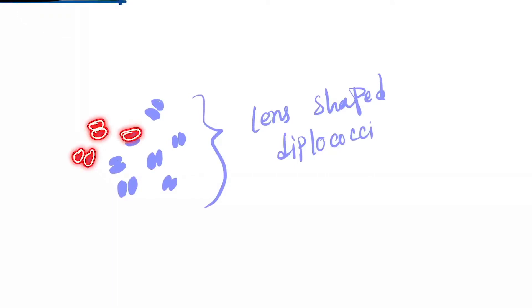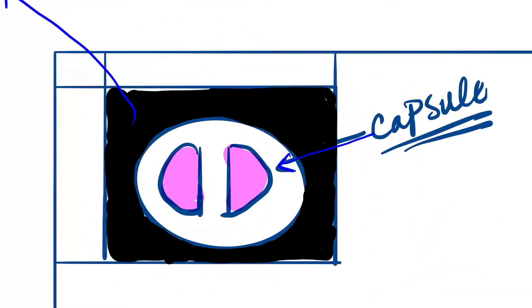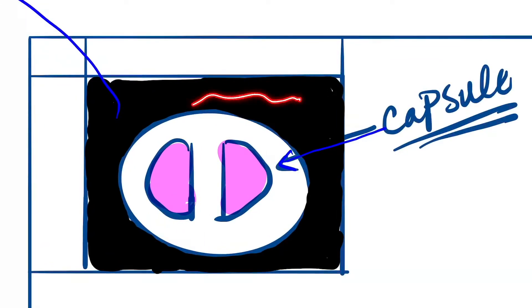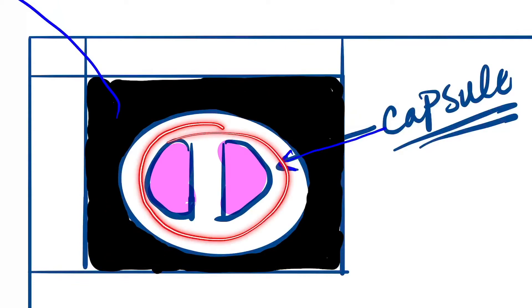Lens-shaped diplo cocci present in pairs. If we do the negative stain, you can see this picture. This is the India ink or black color, and this white portion is the capsule. So they are capsulated.